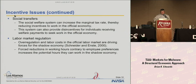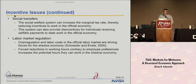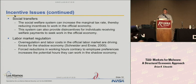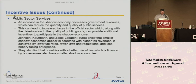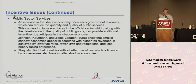Labor market regulation — overregulation on labor costs in the official labor market — is a driving force for the shadow economy, according to Schneider and Enstie. Forced reduction of working hours can often encourage shadow economic activity. In France, for example, if people can only work 35 hours a week, there's probably also going to be more people employed in the shadow economy. There's also a feedback effect: if an increase in the shadow economy decreases government revenues, this can reduce the quantity and quality of public services, which can then lead to higher taxes — a negative feedback loop.